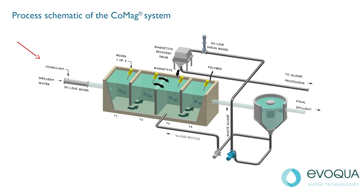The feed is pre-dosed with coagulant prior to entering the first reaction tank, from where it underflows to tank 2 and overflows to tank 3.